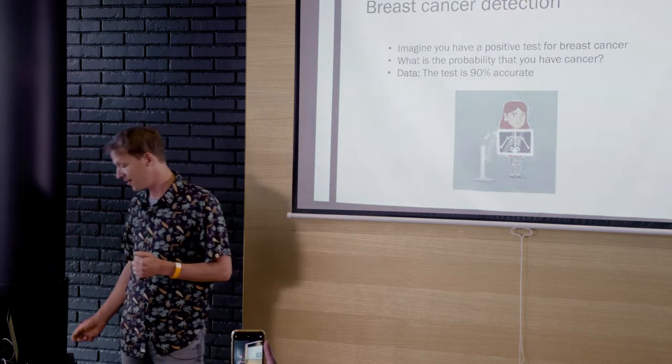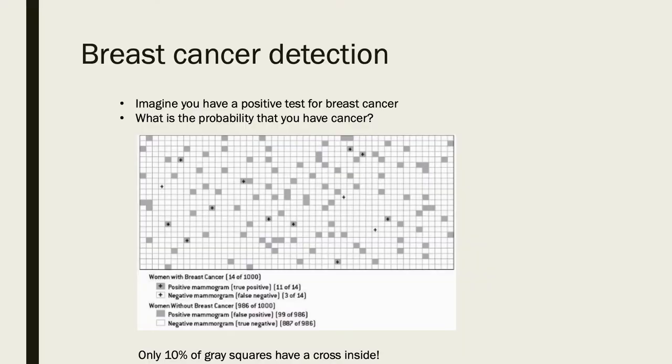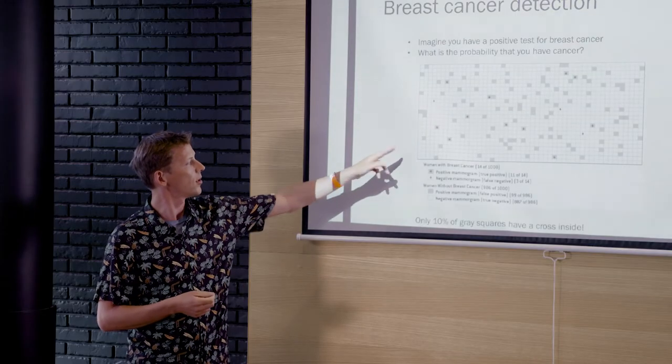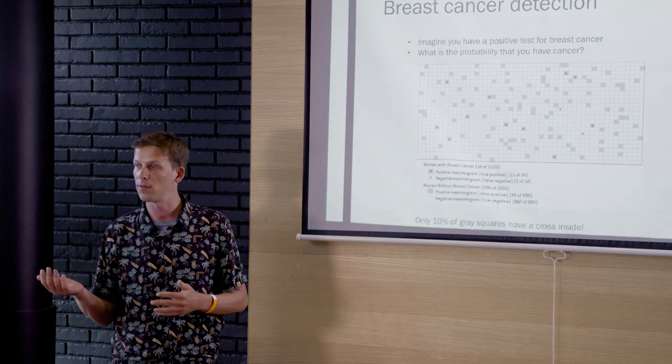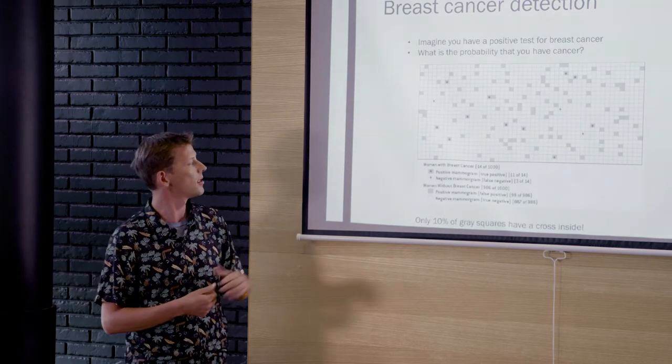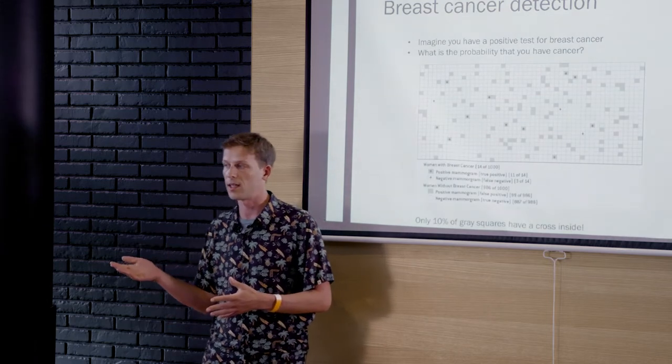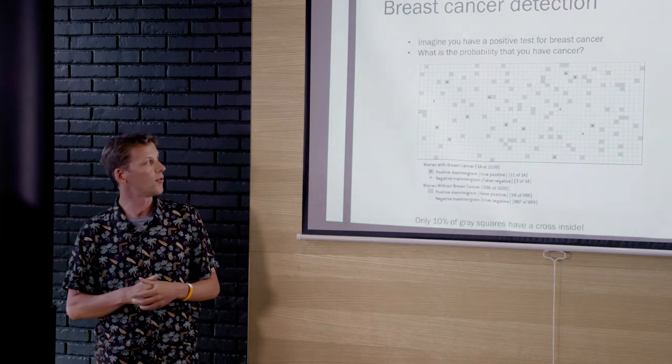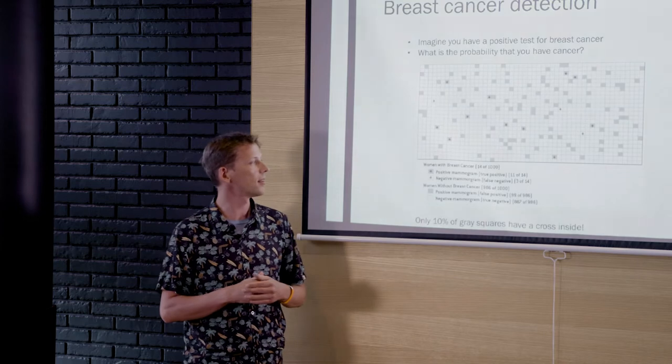Actually, it's not that exactly. So to see how numbers, how it plays out with numbers, we can look at this picture. So in this picture, every small square represents, let's say a woman or group of women. The gray squares represent women which have a positive test for cancer, testing they have cancer. And the cross is people who actually got cancer.